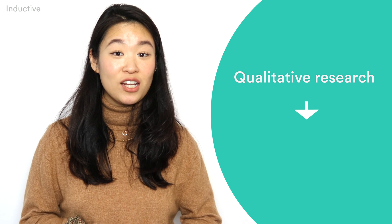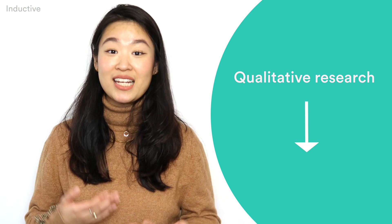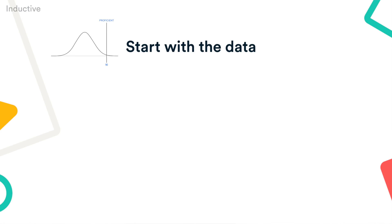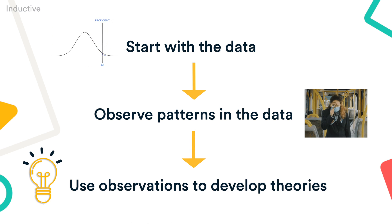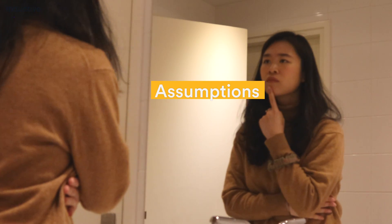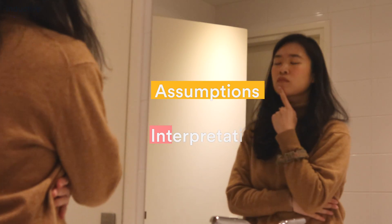Qualitative research is often associated with the inductive method. You start with the data, observe patterns in the data, and use your observations to develop theories or hypotheses. That means the research design is often more flexible and open to change as new ideas emerge from the data. To avoid bias, you need to reflect carefully on your own assumptions and interpretations.